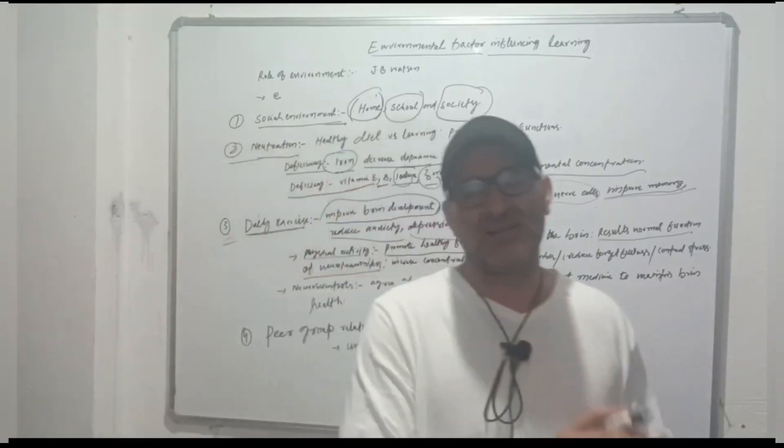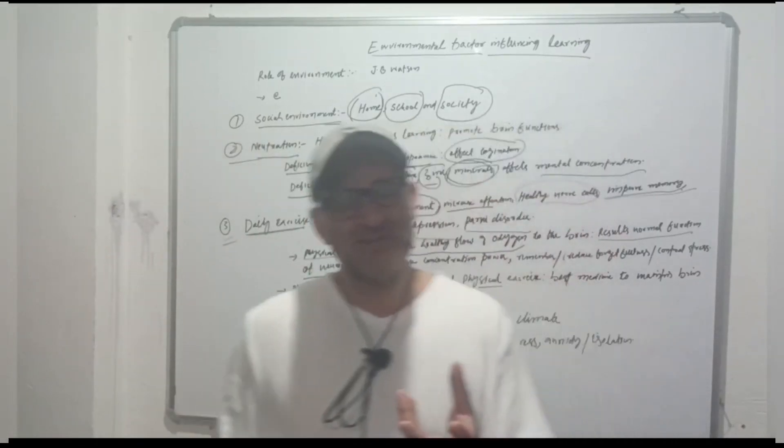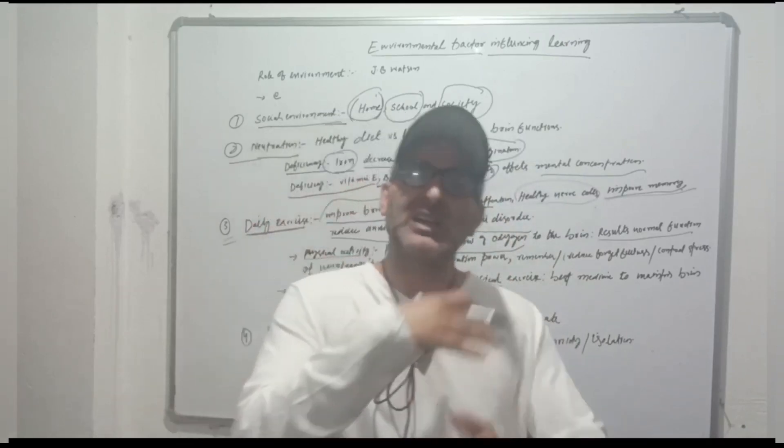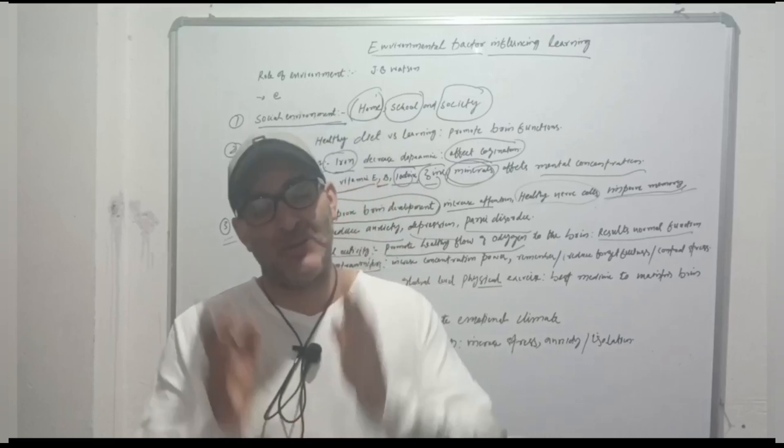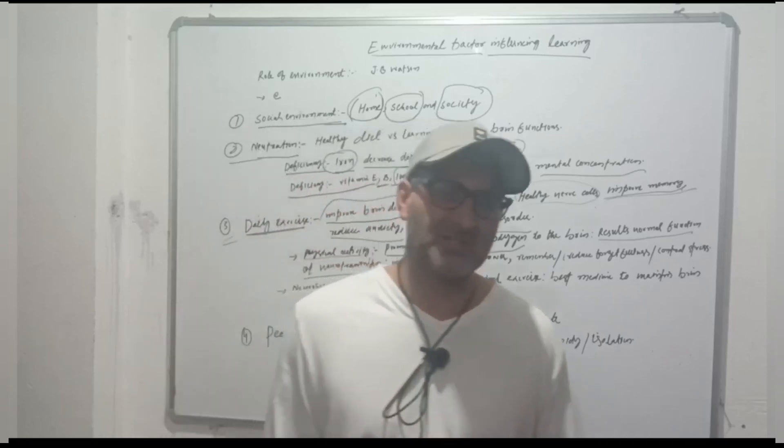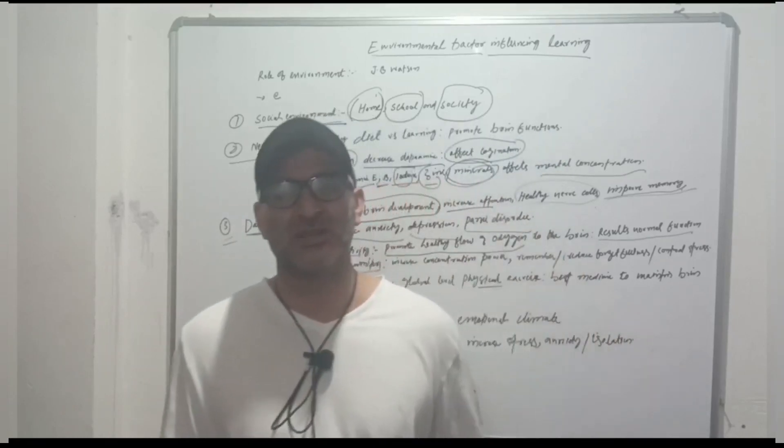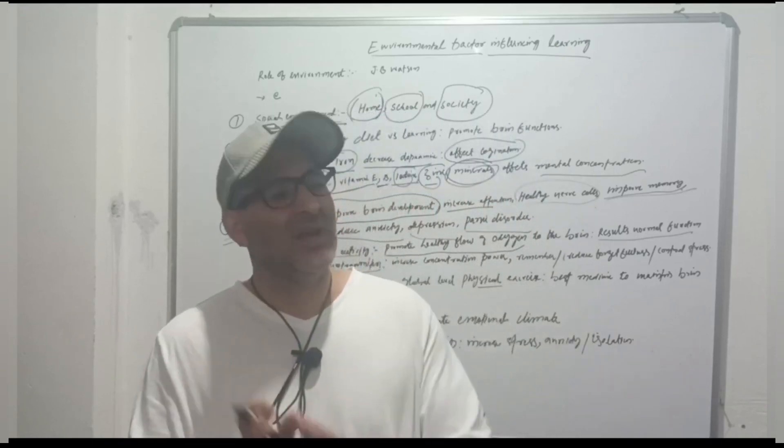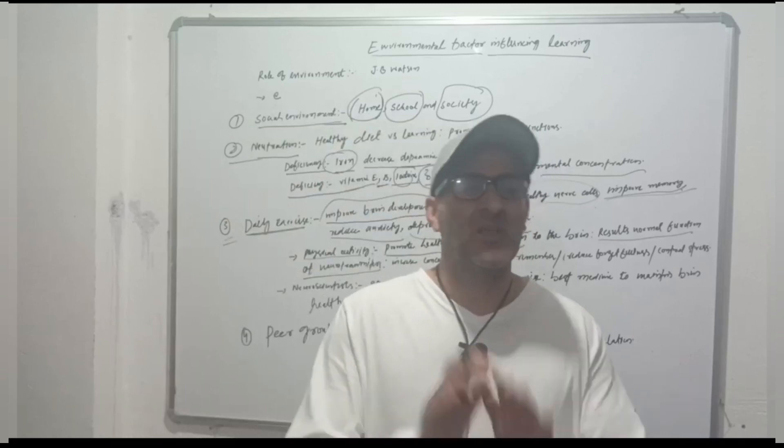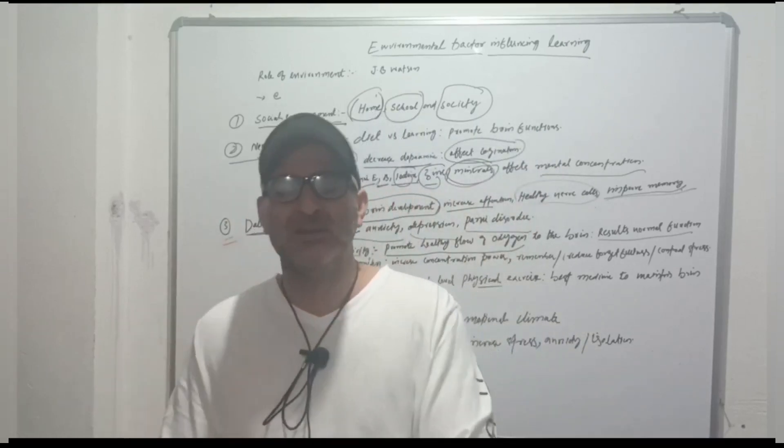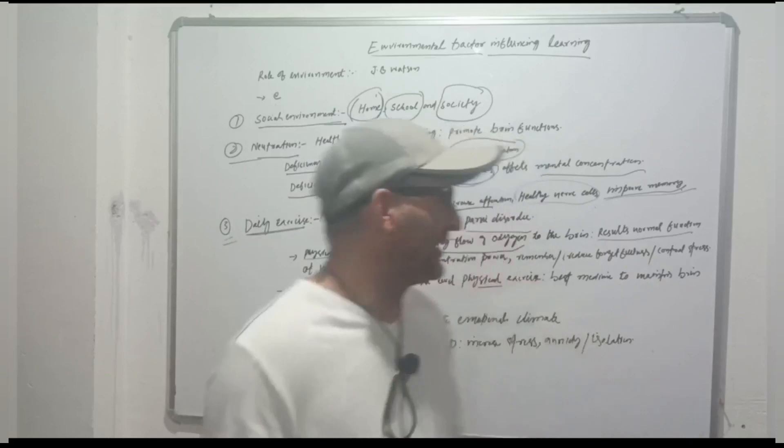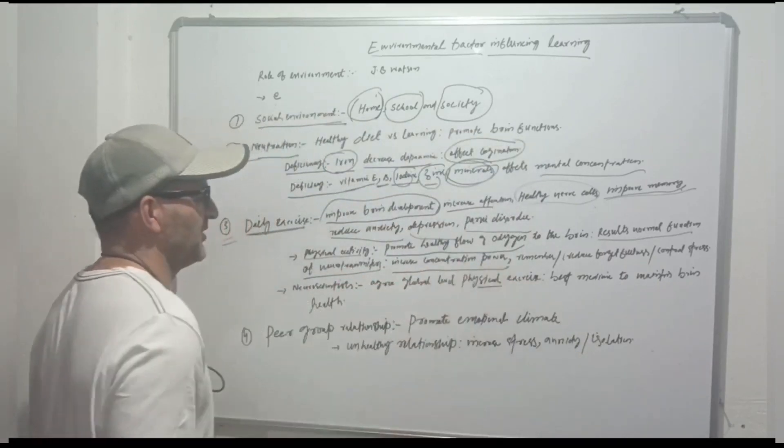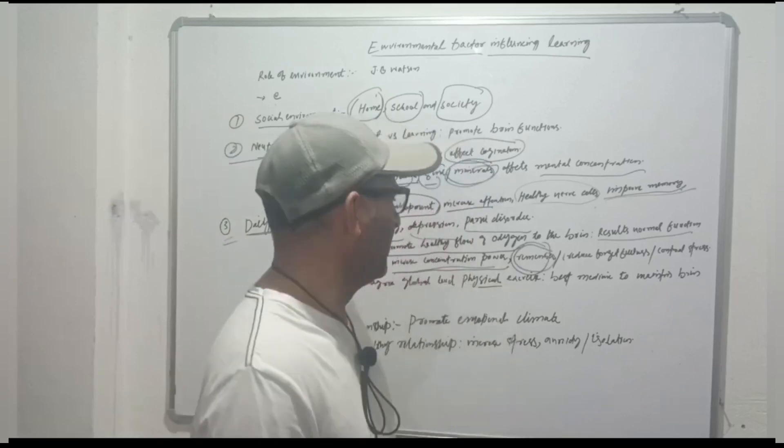Neurotransmitters are responsible for the development of our cognition. Physical activity makes neurotransmitters functional—for example, dopamine, serotonin, and epinephrine—which carry messages from one nerve cell to another. The function of neurotransmitters results in concentration power and helps reduce forgetfulness.